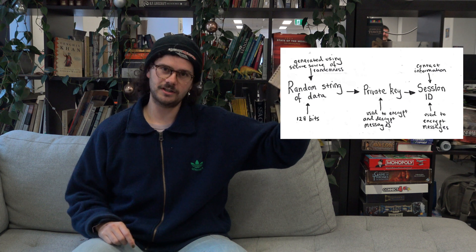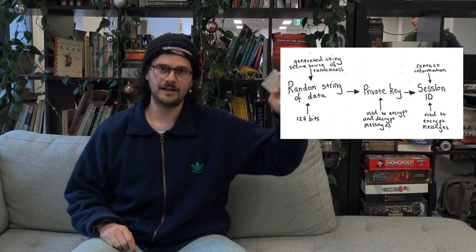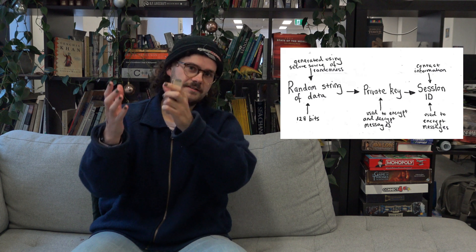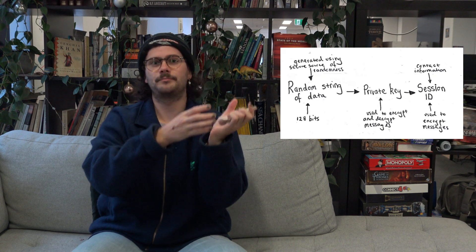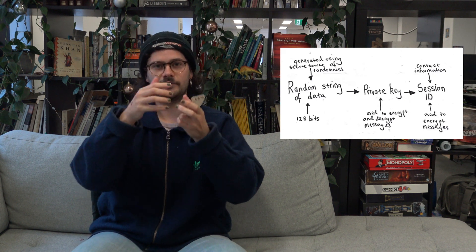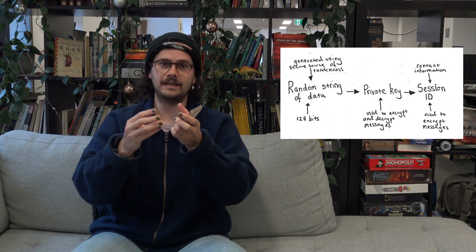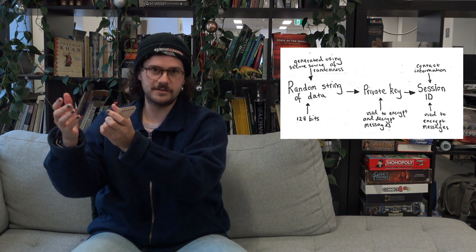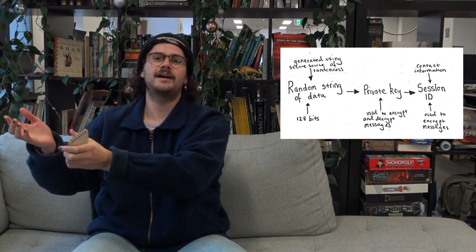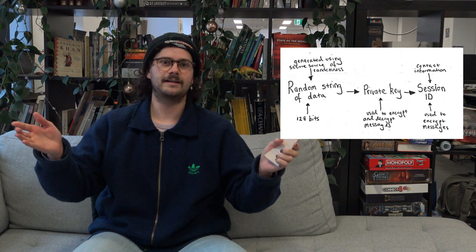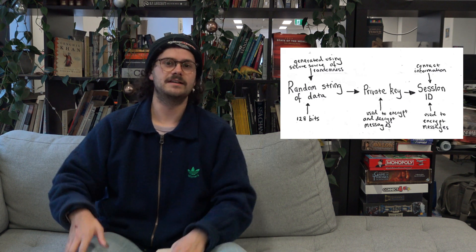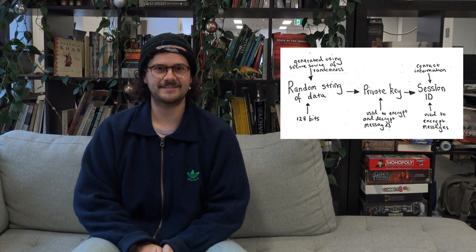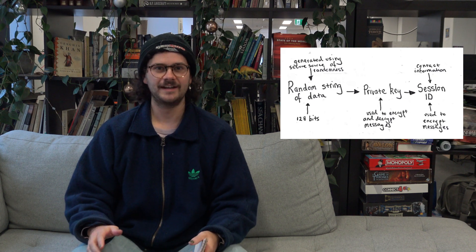So initially we had our random piece of data, which was a seed that we put into this algorithm and it popped out a private key. Now we've got our private key, which we use as a seed and pop into this algorithm to create our session ID. That's how we get our session ID — it's basically all really fancy maths and computer science.